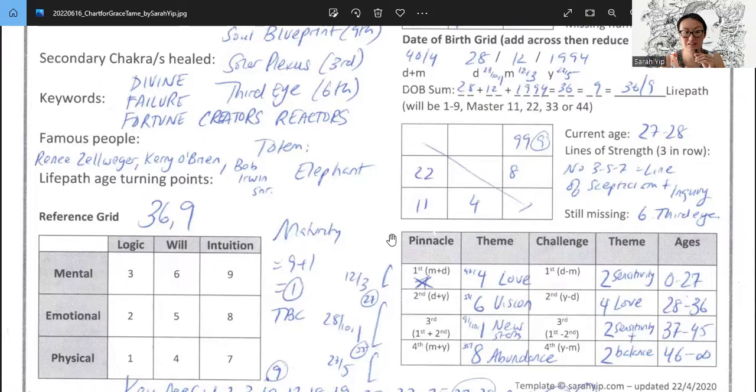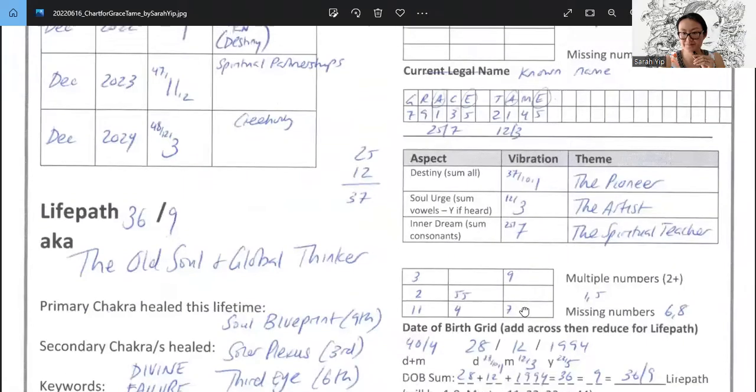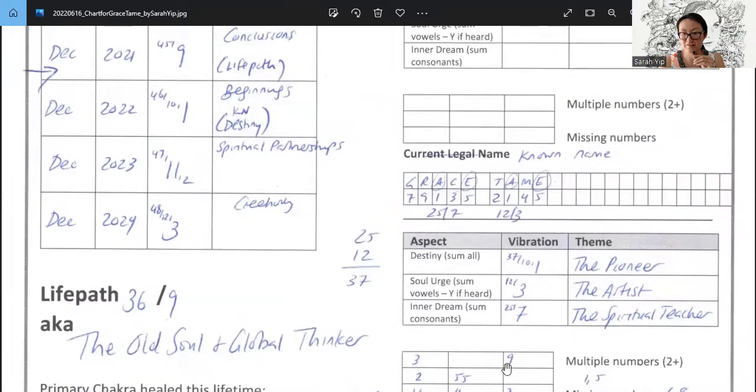Some other famous people with Grace's numbers, 36/9s: Renée Zellweger at 36, she was reprising Bridget Jones, which in its own special way I think gave women a certain voice that they didn't have before. Kerry O'Brien, who's actually interviewed Grace. Bob Irwin Sr., so he's the one who helped to start Australia Zoo. Very much this is the number of legends. And of course numbers are our potential; it's up to us how we use it. But what we'll see from Grace's chart is she is pumping them to the max, a very special person.